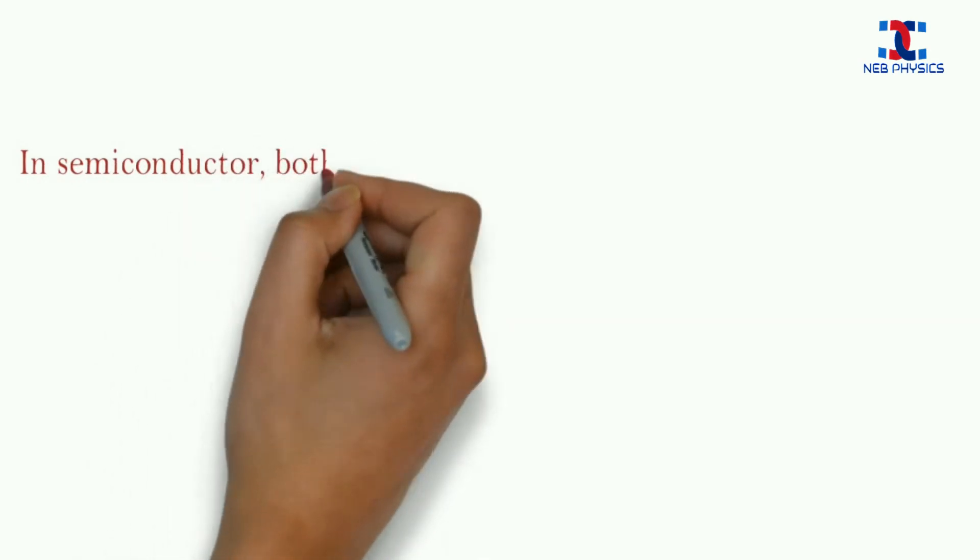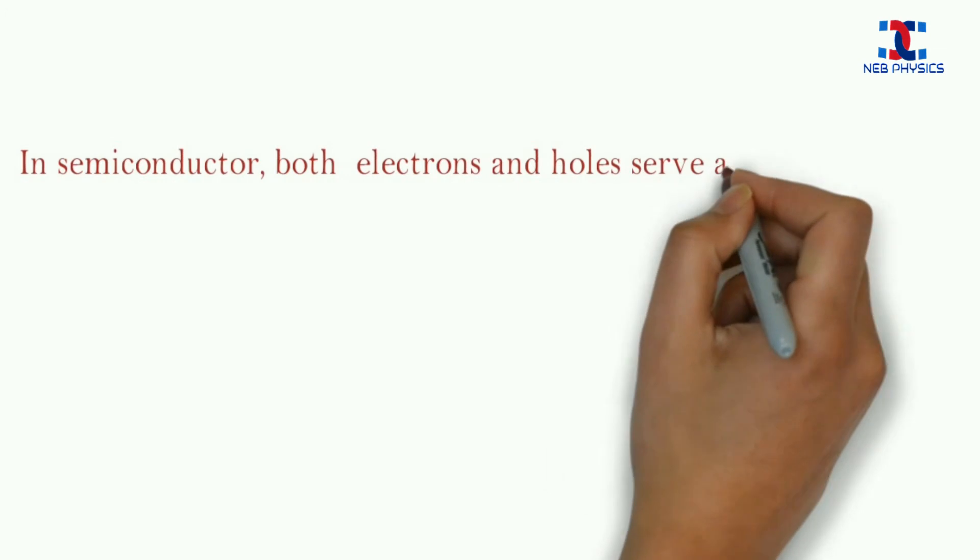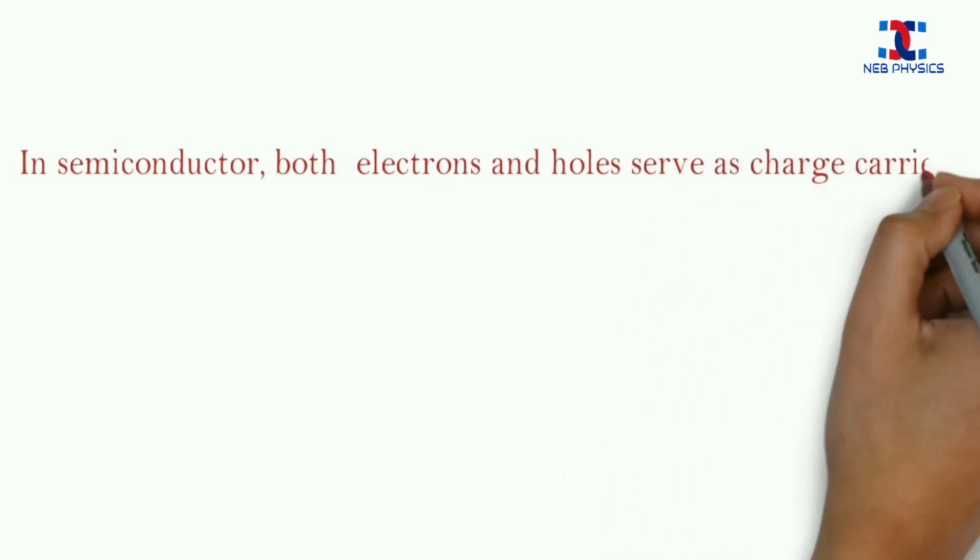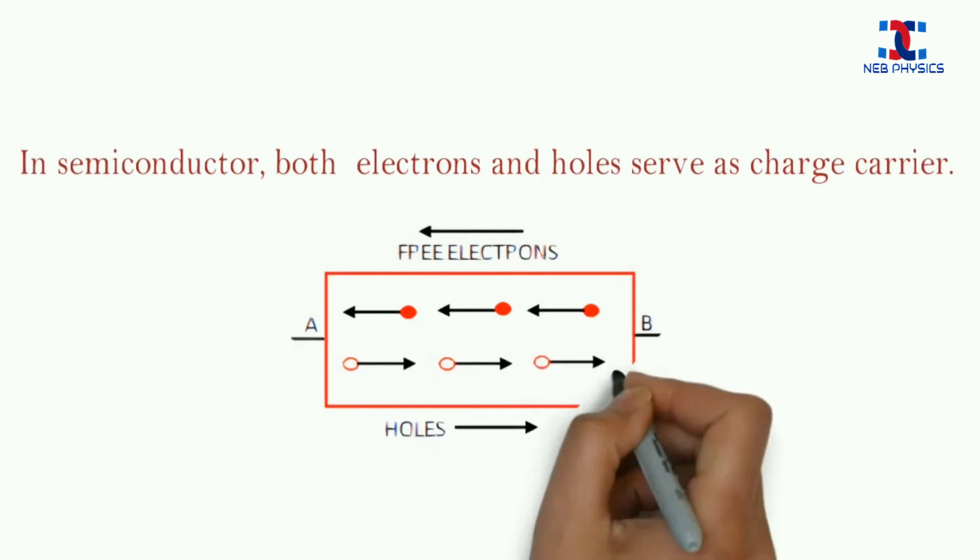Now if we see semiconductors, both electrons and holes are charge carriers. In presence of electric field, the movement of electrons and holes are in opposite directions.